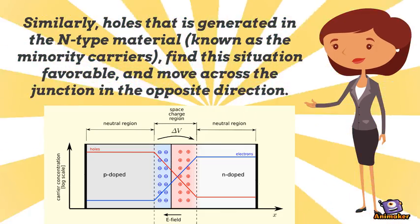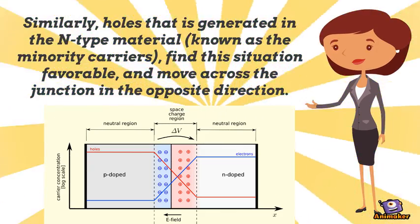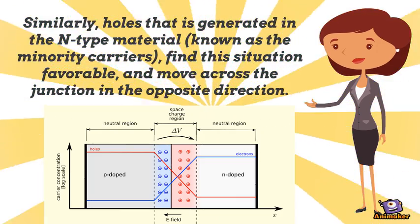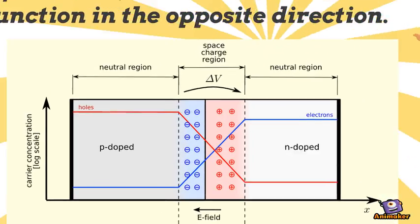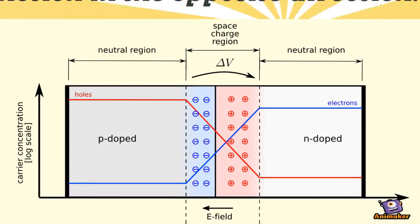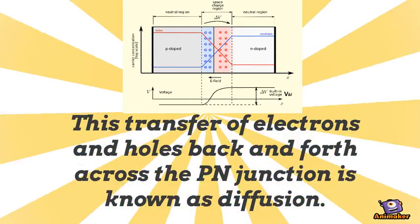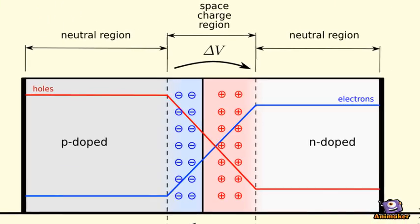Similarly, holes that are generated in the N-type material, known as the minority carriers, find this situation favorable and move across the junction in the opposite direction. This transfer of electrons and holes back and forth across the P-N junction is known as diffusion.